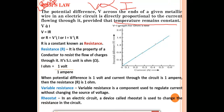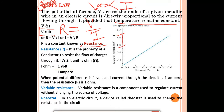From V ∝ I, removing the proportionality sign gives V = IR, where R is the proportionality constant called resistance. This is Ohm's law in mathematical form: V = IR, where V is potential difference, I is current, and R is resistance. Two more formulas: R = V/I and I = V/R.